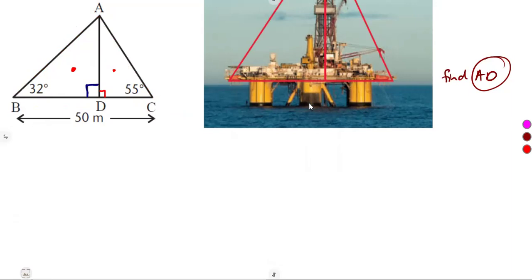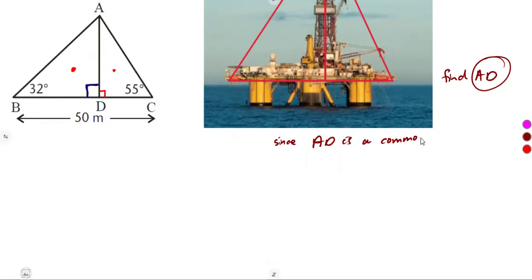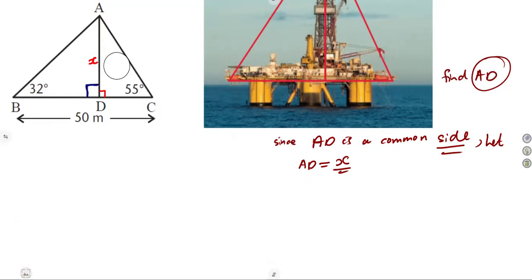Let's see what we can do to determine the length AD. There are options — we can calculate from the outer way, or we can use the fact that AD is a common side for both right-angled triangles. Since AD is a common side for both triangles, let that be equal to x. So we are going to let AD = x.